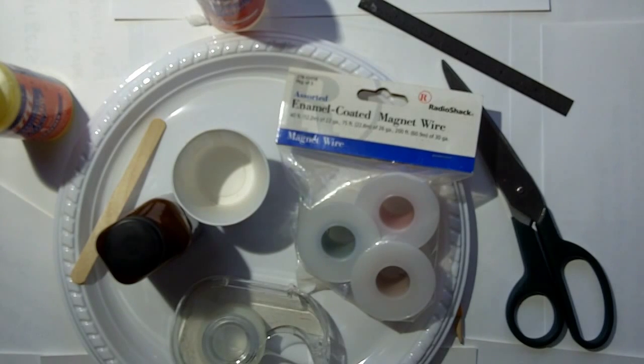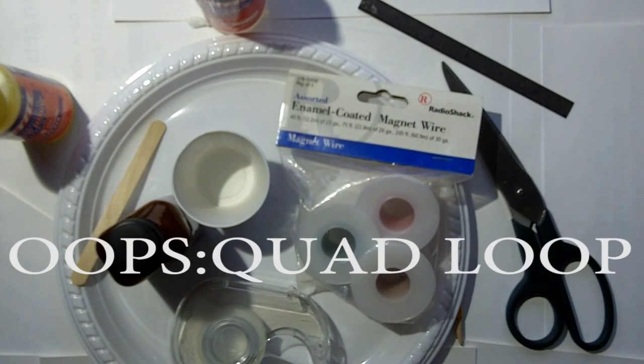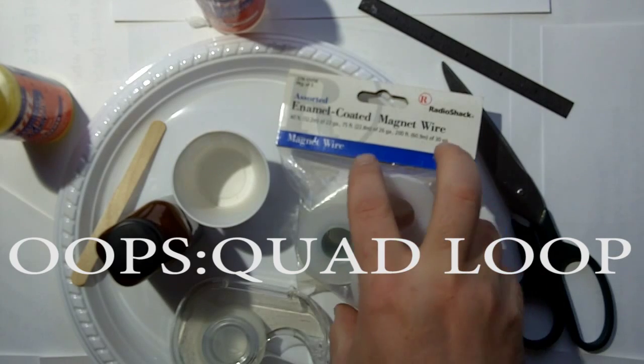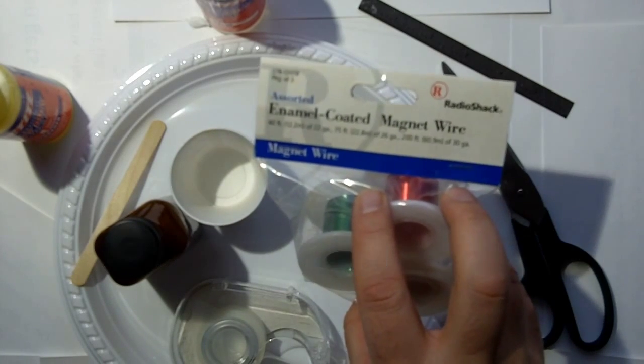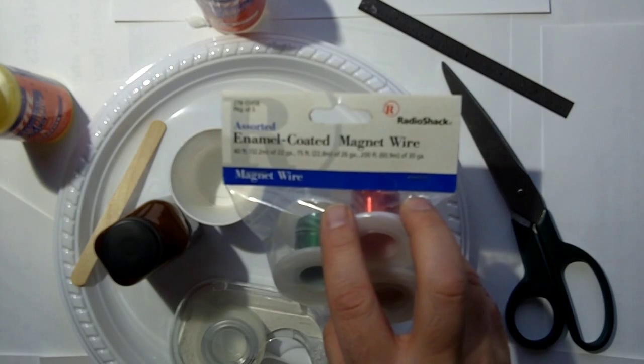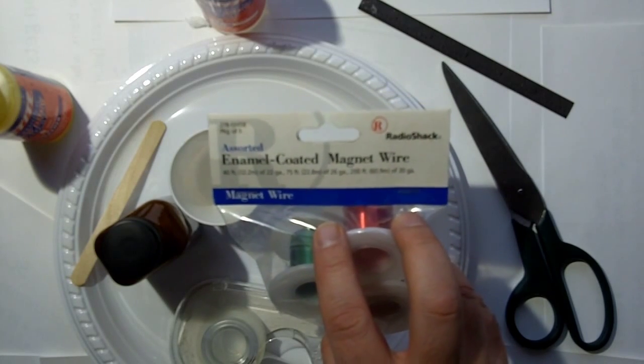These are the parts you're going to need to construct the dual-loop experiment. The number one important part is the enamel-coated magnet wire, which you used to be able to get at Radio Shack.